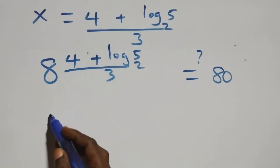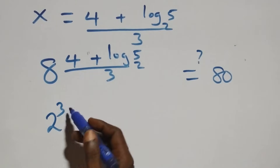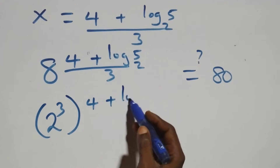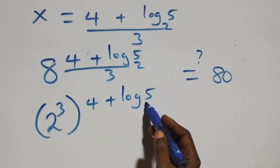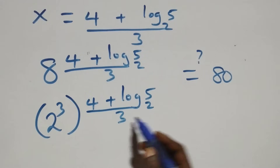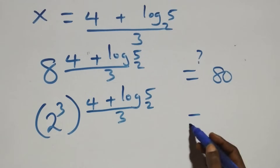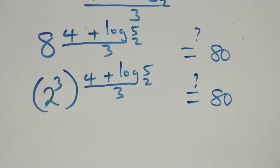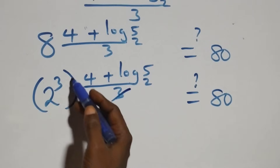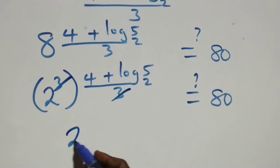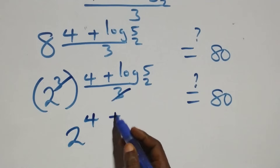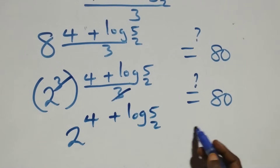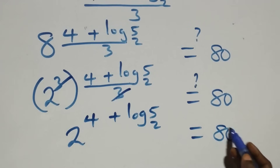We verify: substituting x equals (4 plus log₂5) over 3, we have 8 raised to that power equals 80. Since 8 equals 2 cubed, we write (2³) raised to (4 plus log₂5) over 3. The 3s cancel, leaving 2 raised to the power 4 plus log₂5, which equals 80.